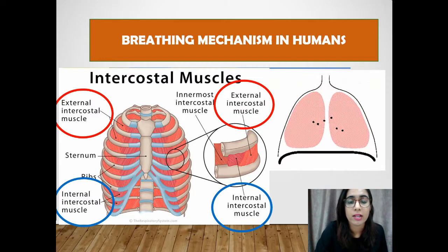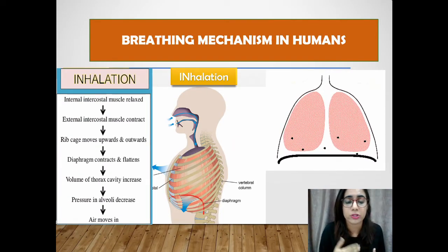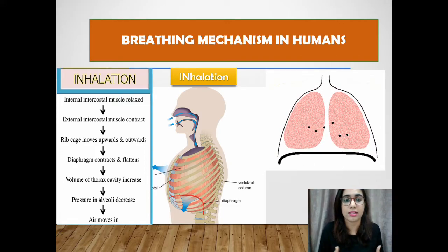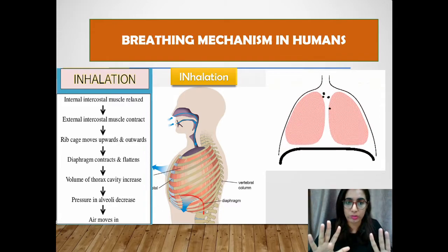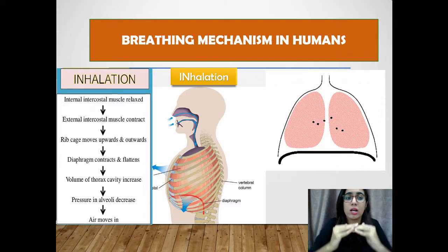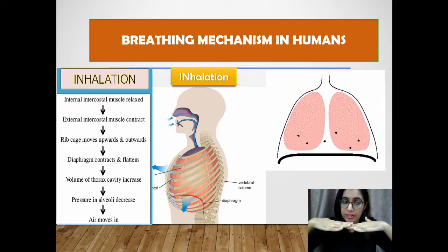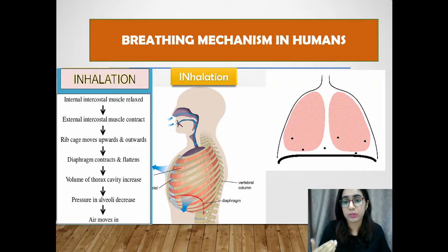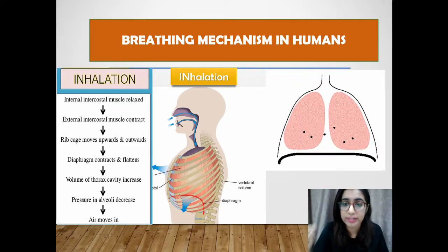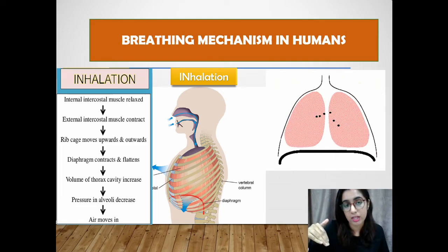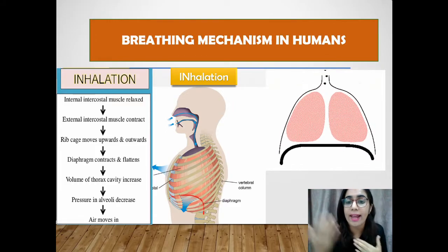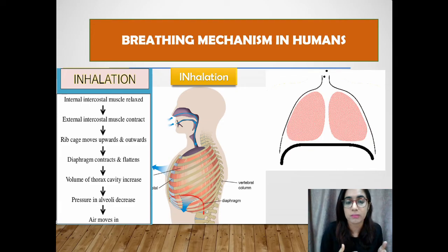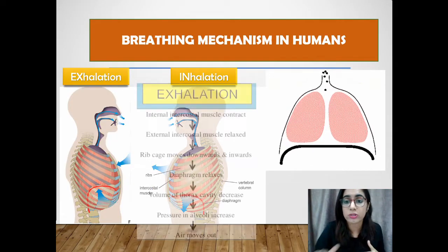During inhalation, the internal intercostal muscles relax and the external intercostal muscles contract, causing the ribcage to move upwards and outwards. The diaphragm contracts and flattens. The volume of the thoracic cavity increases, causing pressure in the lungs and alveoli to decrease. Since pressure outside in the atmosphere is now higher, air moves in from high pressure to low pressure.